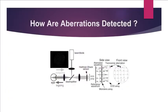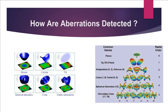How are aberrations detected? Wavefront analysis is used to measure aberrations of the optical system. The error produced from the wavefront analysis is further broken down into components that mathematically and visually describe the specific elements of the aberration. These components are split into two categories: higher-order aberrations and lower-order aberrations.